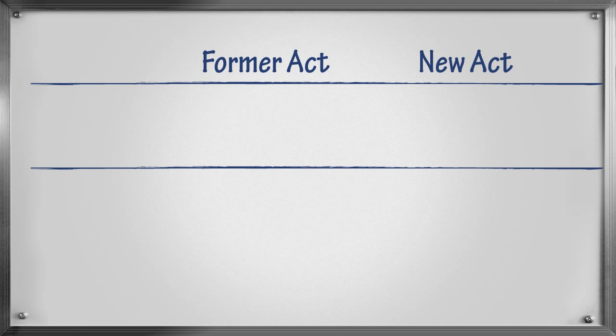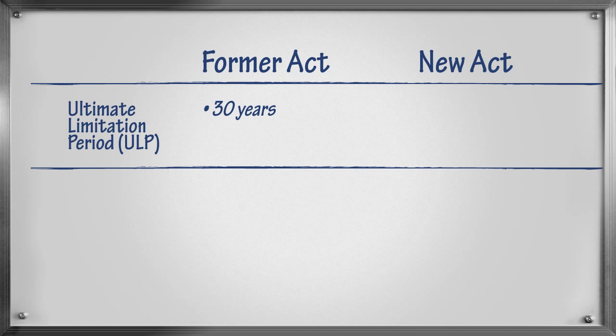there were two different ultimate limitation periods: a general 30-year ultimate limitation period which applied to most claims, and a 6-year ultimate limitation period which applied to medical malpractice and negligence claims against doctors, hospitals and hospital employees. The ultimate limitation period under the former act began to run from the accrual of the legal claim. Accrual occurred once all of the elements of the legal claim were present.